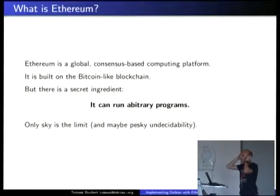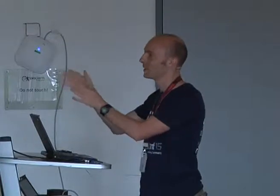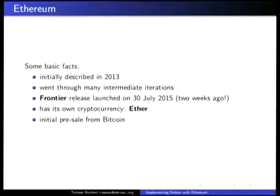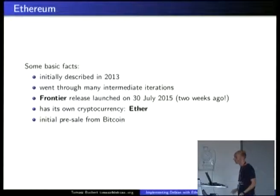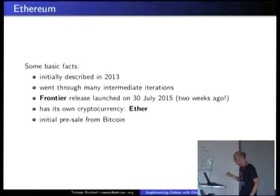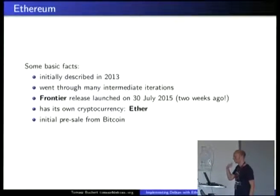Ethereum is like a Turing complete machine compared to an abacus. With Ethereum, you can execute, in a distributed manner, arbitrary programs. Some basic facts: it was initially described three years ago, and there have been many iterations already, improving the protocol. Frontier is the recent release from two weeks ago, which people could use to start mining the blocks necessary for computations on the Ethereum blockchain, and in some sense it started really working.